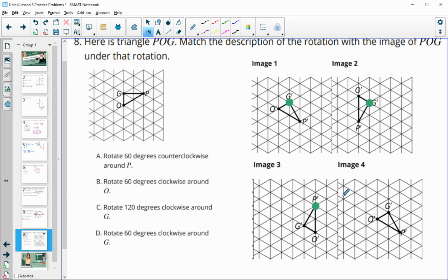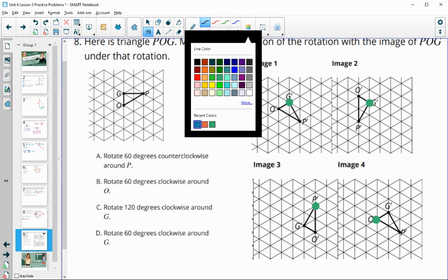And then in this one, O stays in the same spot. So we can see that in the same space there. So then this helps us to narrow down our options.